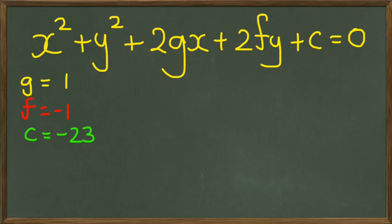So this equation, then, would simply be x squared plus y squared plus 2 times 1 is 2, so plus 2x minus 2y minus 23 equals 0.